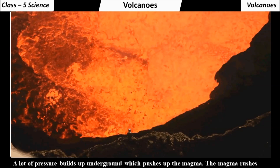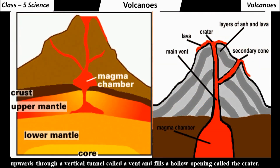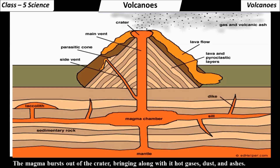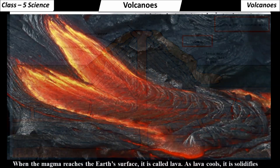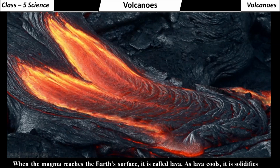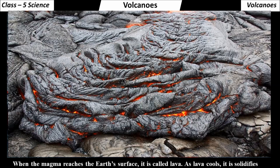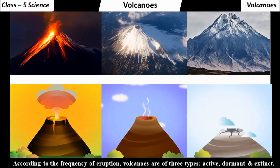The magma rushes upwards through a vertical tunnel called a vent and fills a hollow opening called the crater at the top. The magma bursts out of the crater, bringing along with it hot gases, dust and ashes. When the magma reaches the earth's surface, it is called lava. As lava cools, it solidifies and forms rocks.